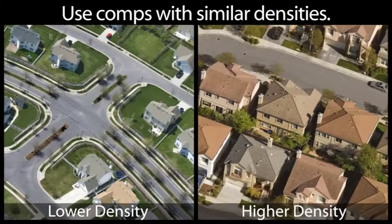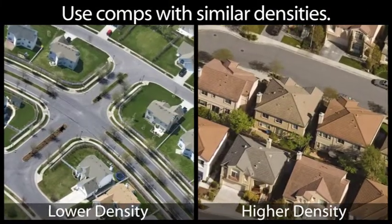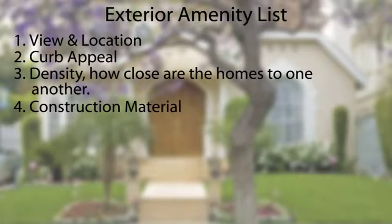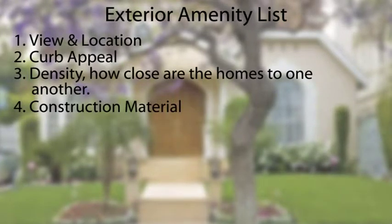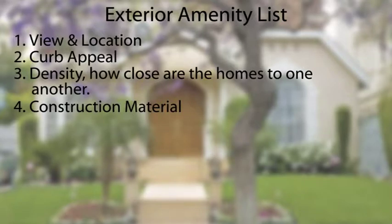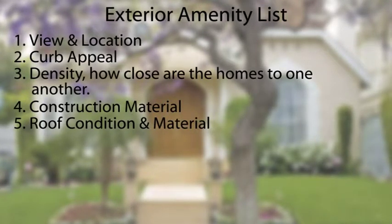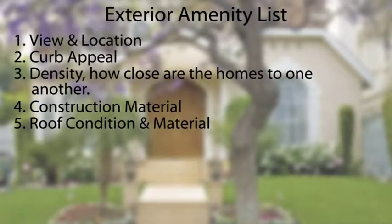In our part three video, I cover the second step in determining market value, which is to take the properties in your shortlist and choose those homes that most closely match your own home's amenities and finishes. I provide you a checklist of interior and exterior amenities so you are able to systematically compare your home to each home in your shortlist.